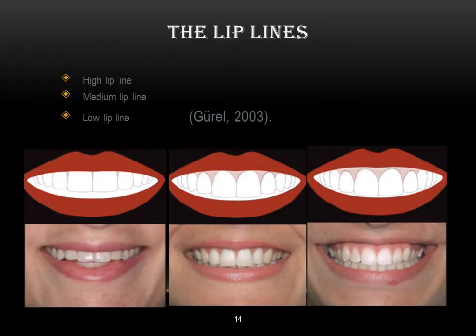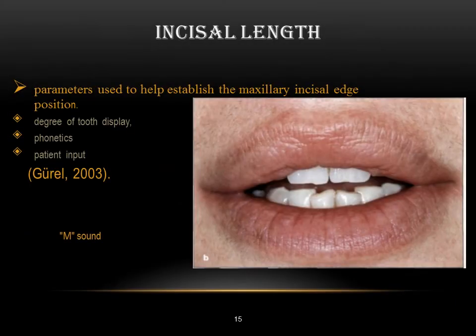Regarding lip lines, we have three types: high lip line, medium lip line, and low lip line. The incisal length of the anterior teeth should be detected at rest position or by making the patient say the sound 'M.' This amount of maxillary incisal edge display is affected by the age and sex of the patient. Older patients show about 1–2 mm at rest, while younger patients show about 3–4 mm.